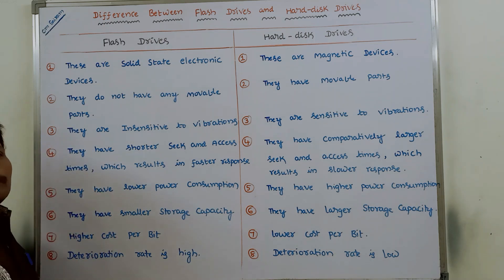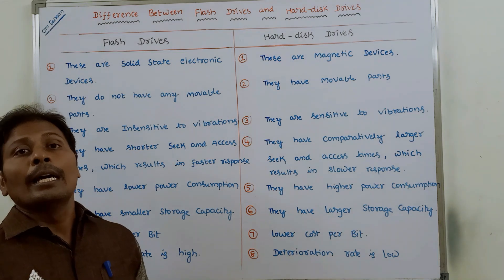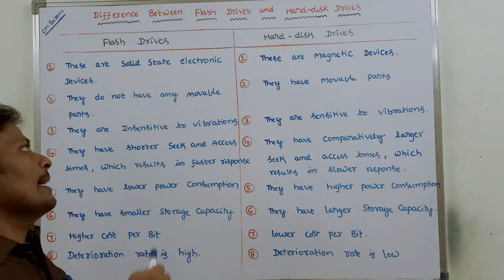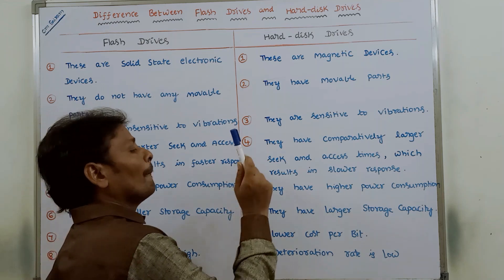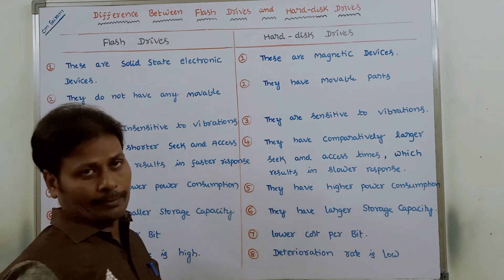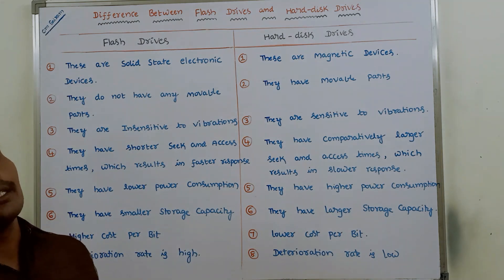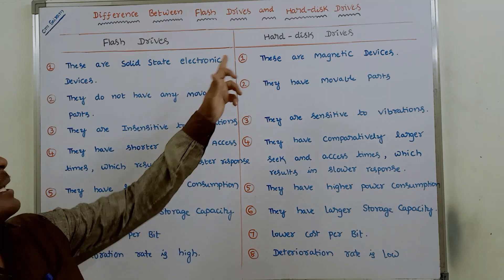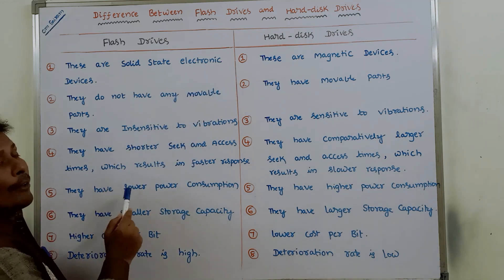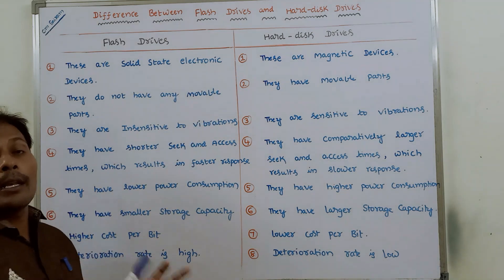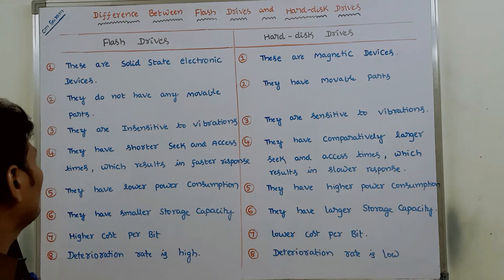The fifth point is that flash drives consume very less power, whereas hard disk drives consume more power. So more power consumption is there in hard disk drives, whereas in flash drives less power consumption is there.